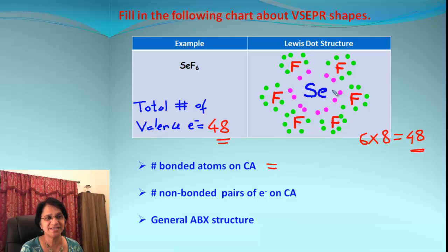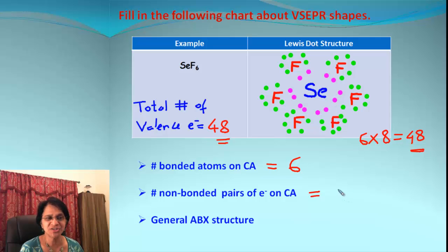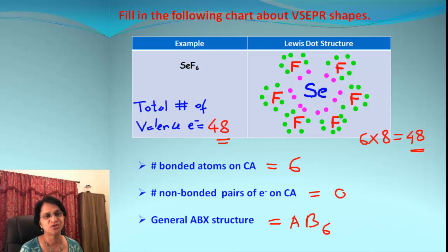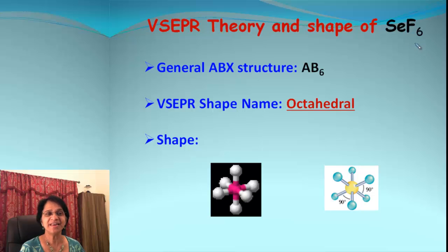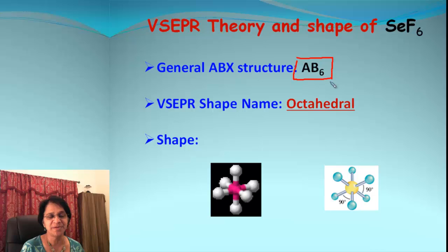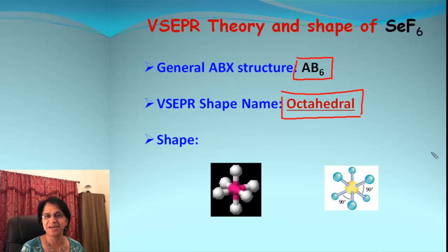For SeF₆: six fluorine atoms are bonded to central selenium. There are no non-bonded or unshared electron pairs. ABX structure: A equals one, B equals six, X equals zero — written as AB6. To summarize: selenium hexafluoride (SeF₆) has ABX structure AB6. According to the VSEPR table, the predicted shape is octahedral, and these pictures show how the molecule appears in 3D.